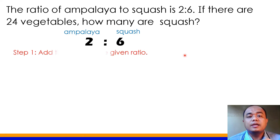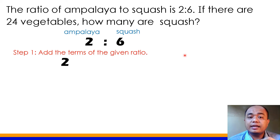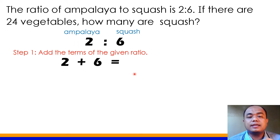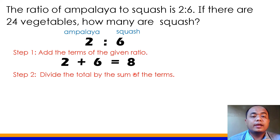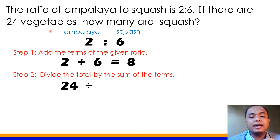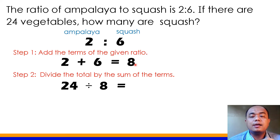Step 1: add the terms in the given ratio. That's 2 plus 6, which equals 8. Step 2: divide the total by the sum of the terms. Yung 24 i-divide natin sa 8. The quotient would be 3.